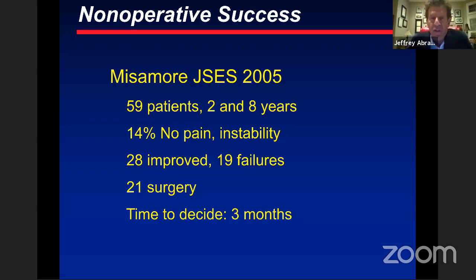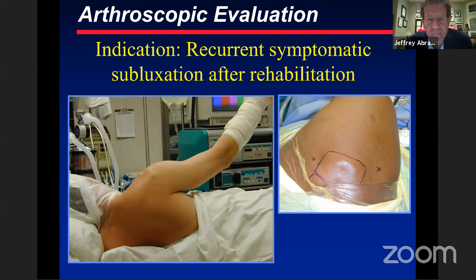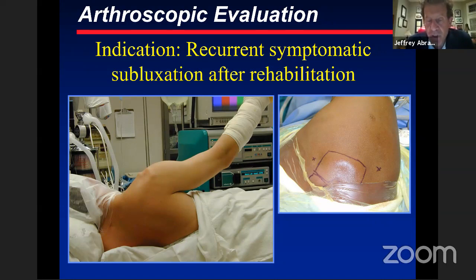In the original Neer and Foster article they talked about a year of non-operative management, but in today's practice that doesn't happen often. Assuming we have symptomatic laxity with an inferior direction — but not Ehlers-Danlos patients — I prefer the lateral decubitus position because I need access to both the front and the back. The arm is almost just suspended in the air with very little traction, so you don't necessarily want to pull the humeral head into the inferior pouch.